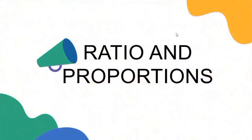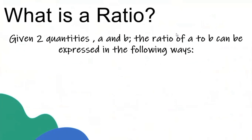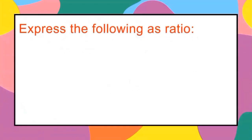Let's proceed with our first topic for today: ratio and proportions. A ratio is the comparison between two quantities. If you are given two quantities a and b, the ratio of a to b can be expressed in two ways — it can be read as 'a is to b,' or written as a fraction, a over b.